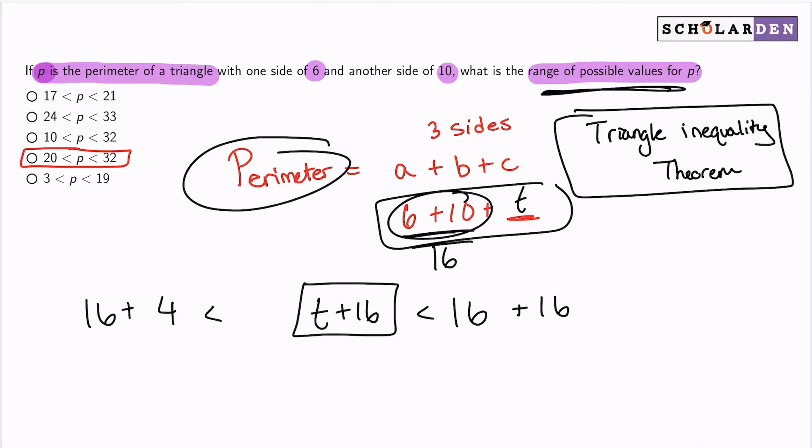Again, we have T, 6 and 10 that will create 16 plus T, which is exactly what we have. And so T plus 16, which is my perimeter, is going to be between 32 and 20. And there's my answer.